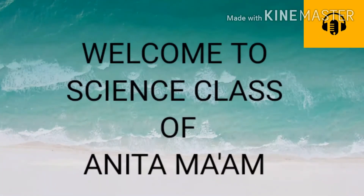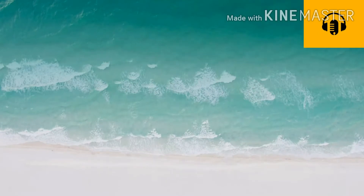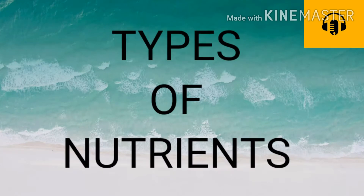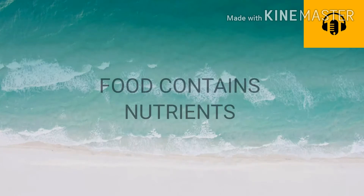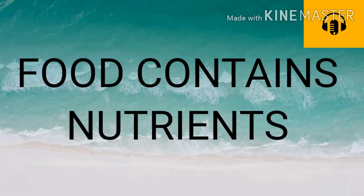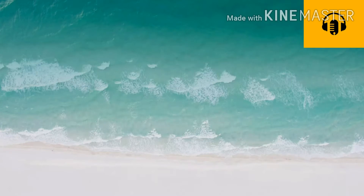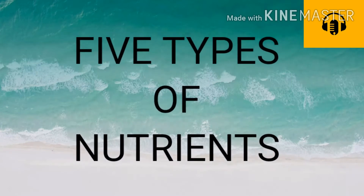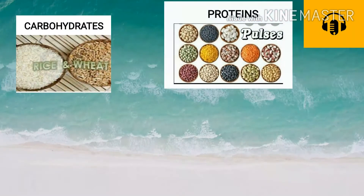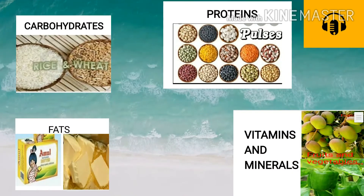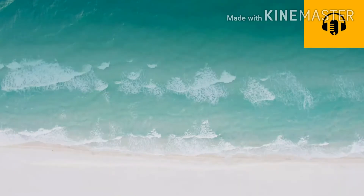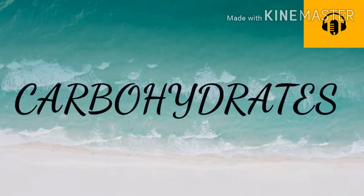Good morning children, I am Anita ma'am and today we are going to learn about different types of nutrients. The food that we eat contains different substances called nutrients. As you already know, there are five types of nutrients: carbohydrates, proteins, fats, vitamins, and minerals. First, let us learn about carbohydrates.